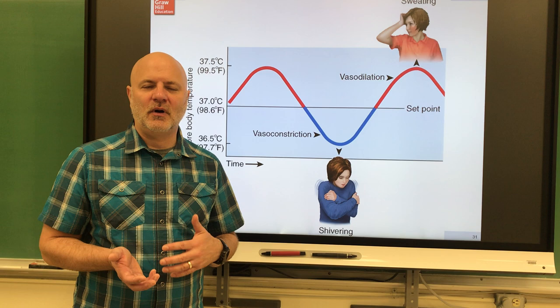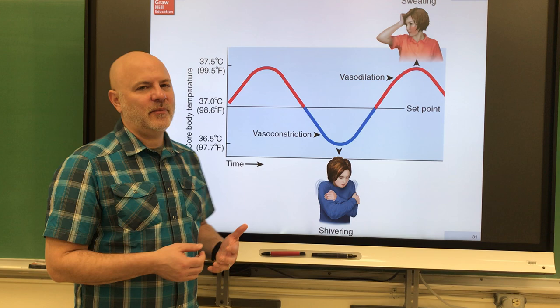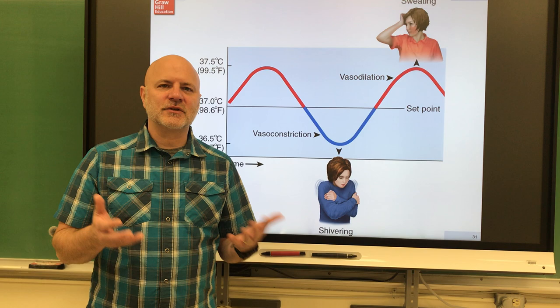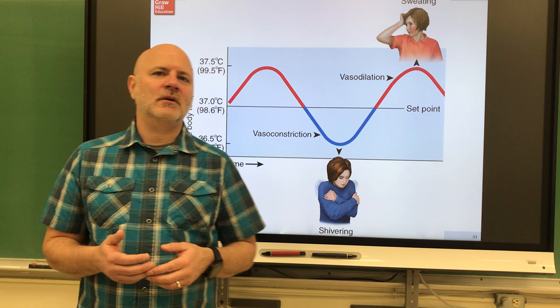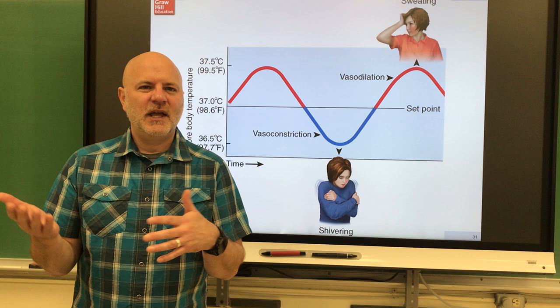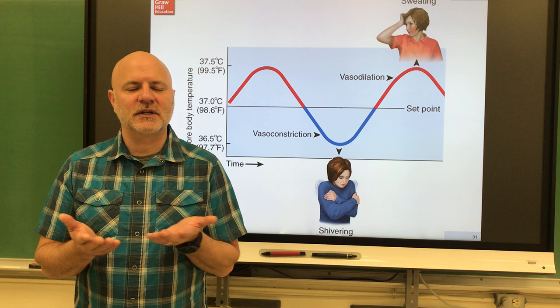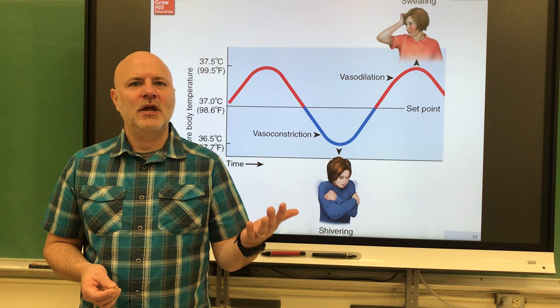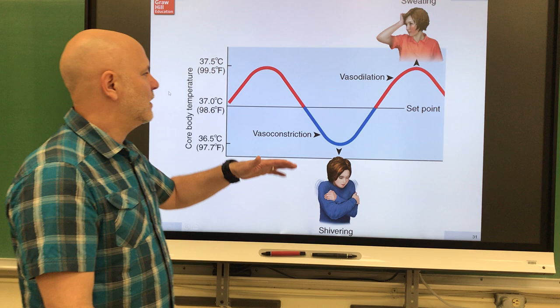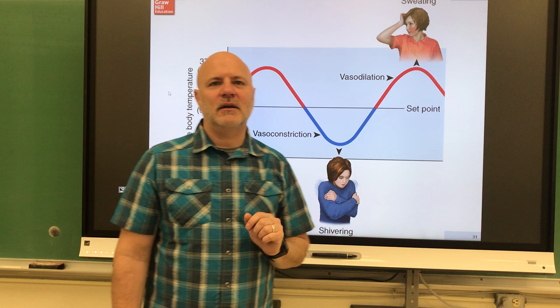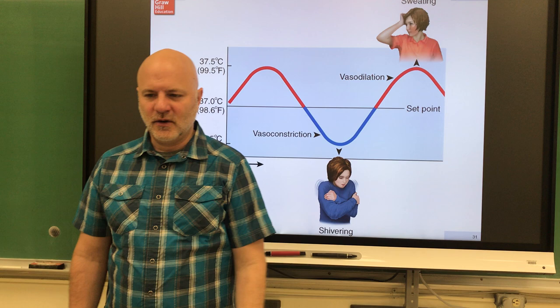There are two major types of control mechanisms. The first is a negative feedback mechanism, where the output of a system suppresses or inhibits the activity of the system. A good example is a home thermostat: if it's set at 72°F and the temperature rises above that, the air conditioning turns on and pumps cold air until the temperature drops below 72 — the output inhibits its own production. Similarly, shivering stops once body temperature returns to normal, and sweating stops once we cool down. Most homeostatic interactions are controlled through negative feedback.